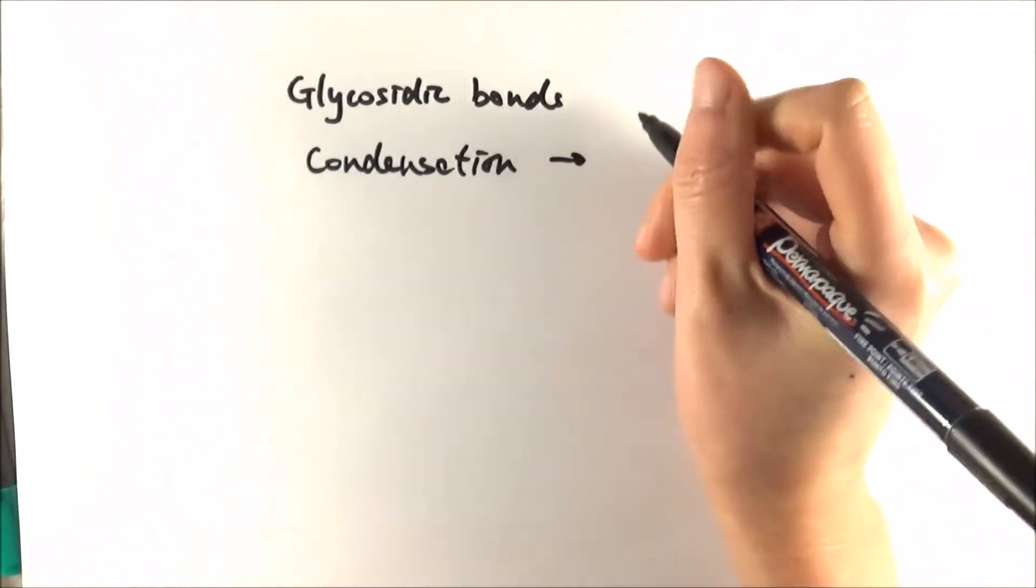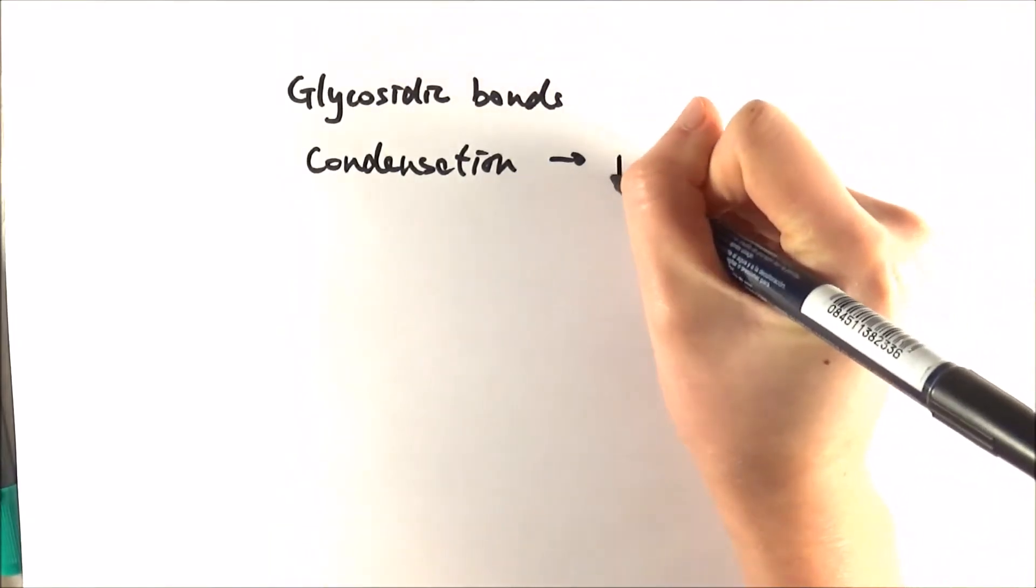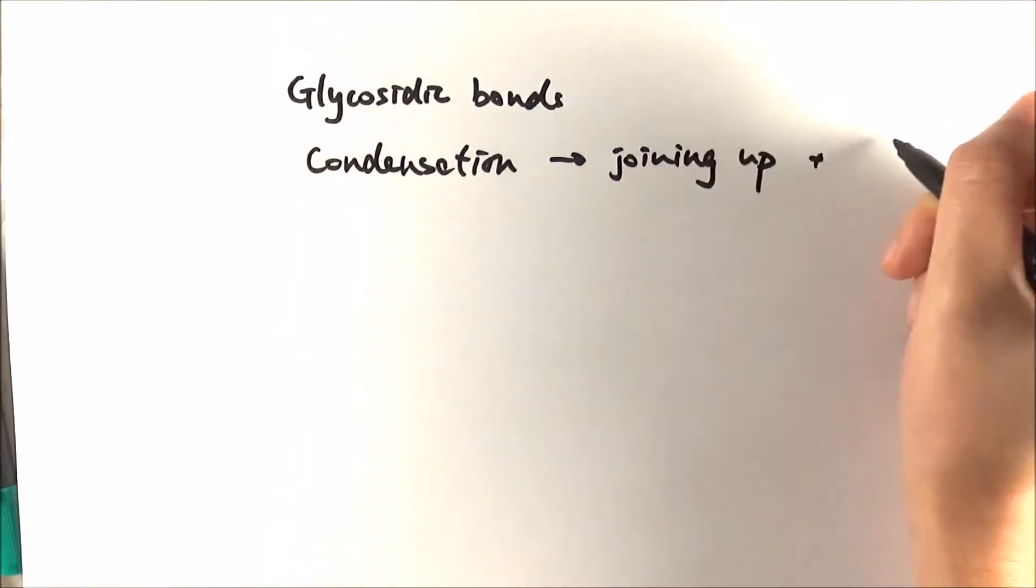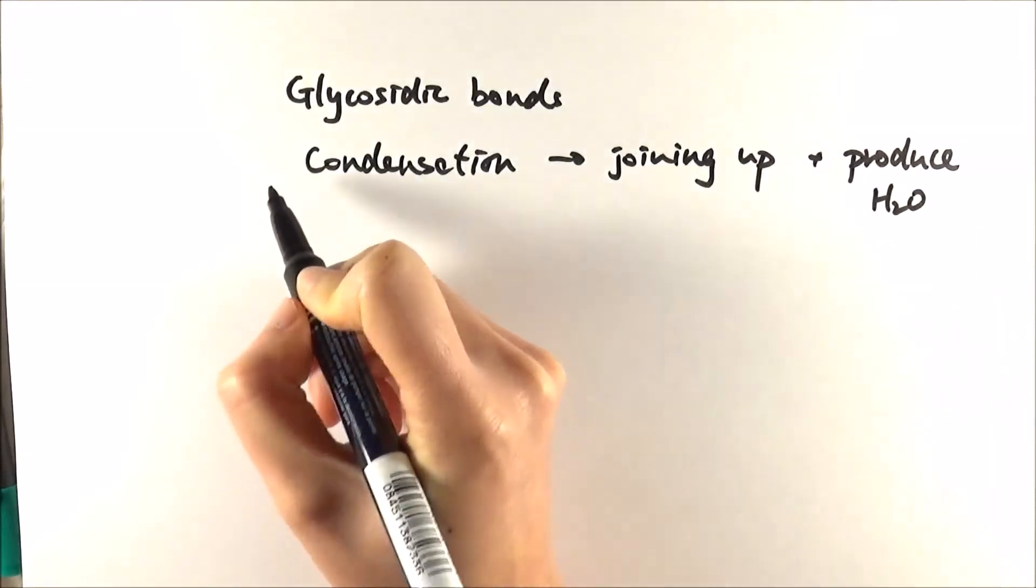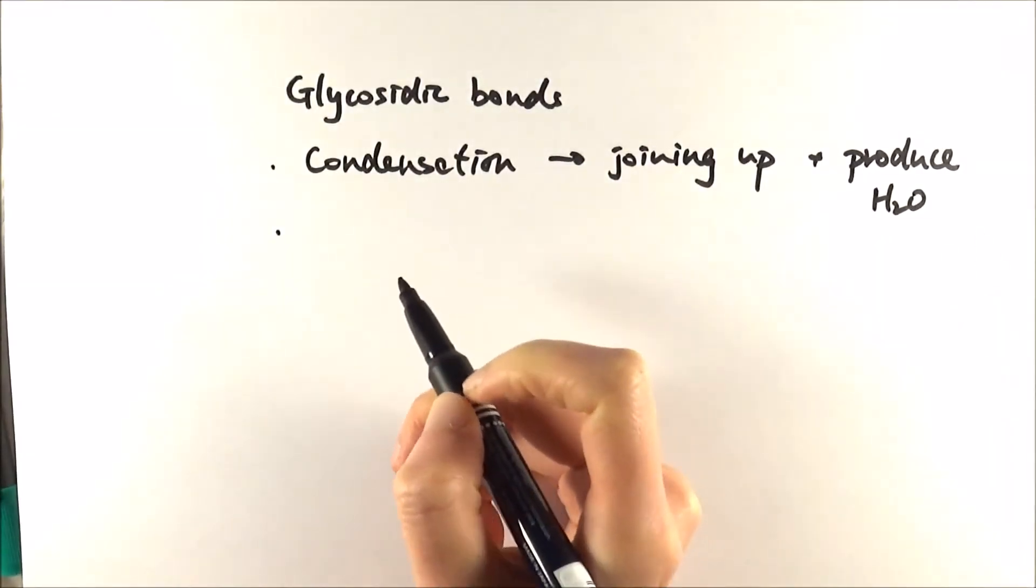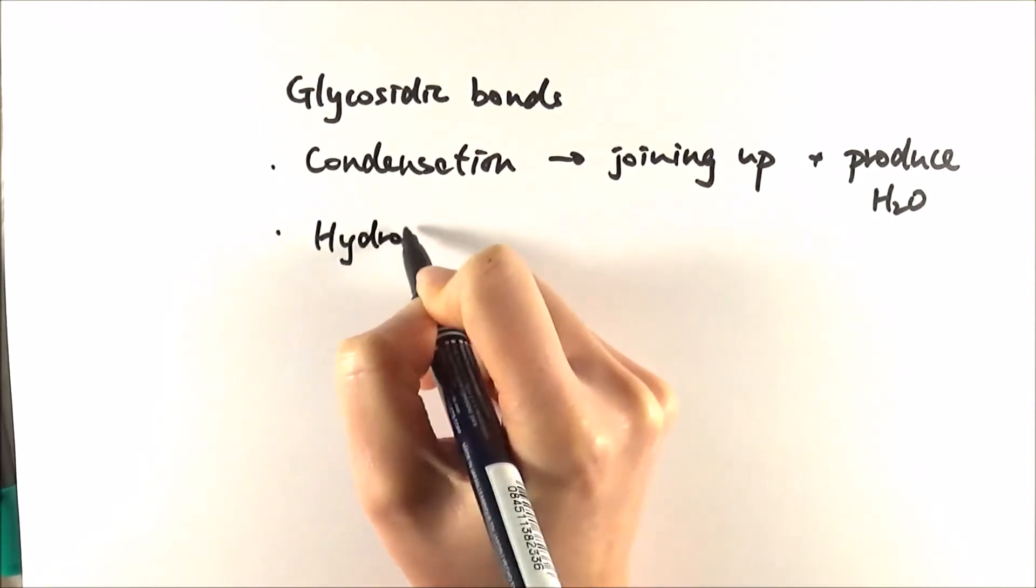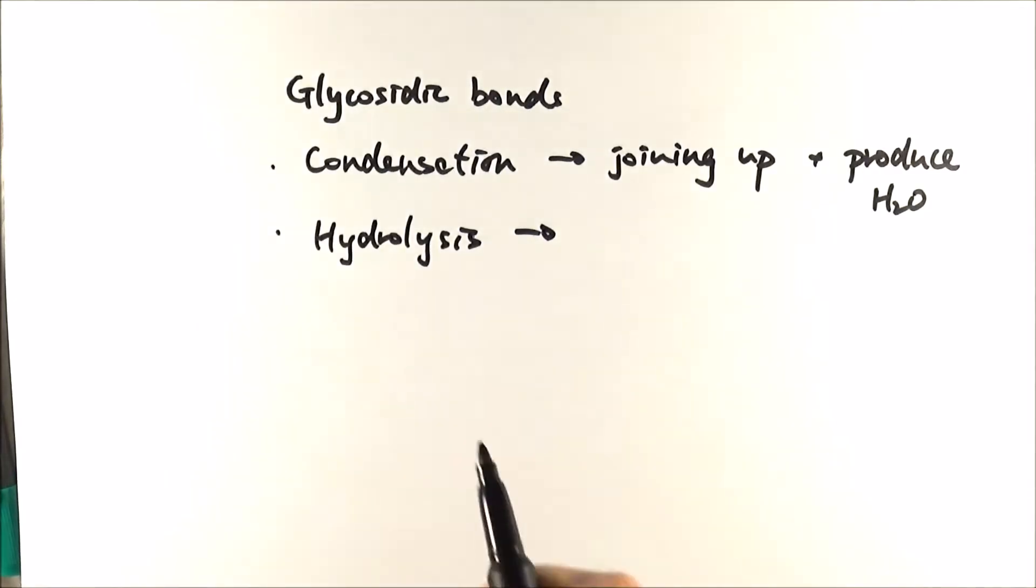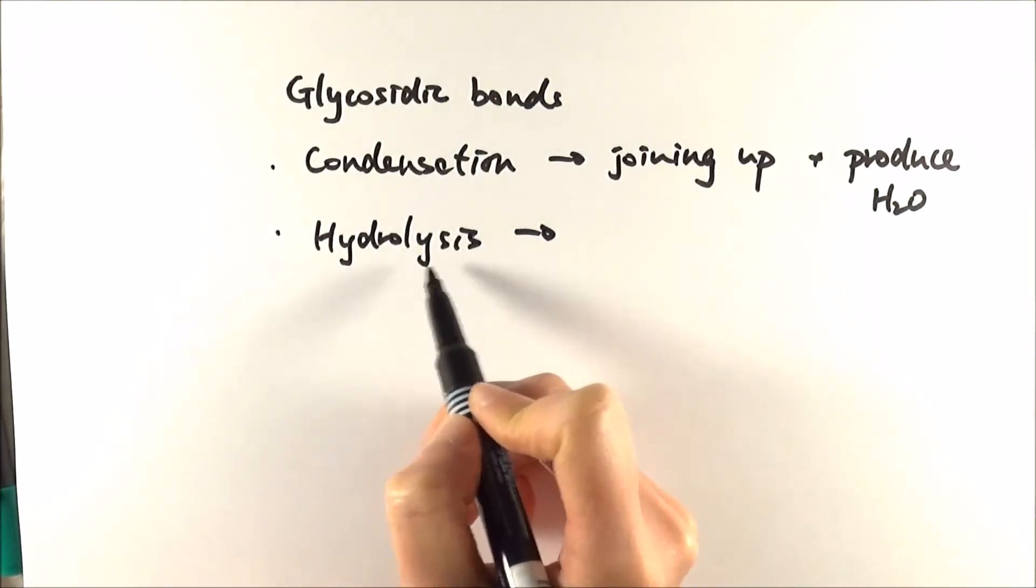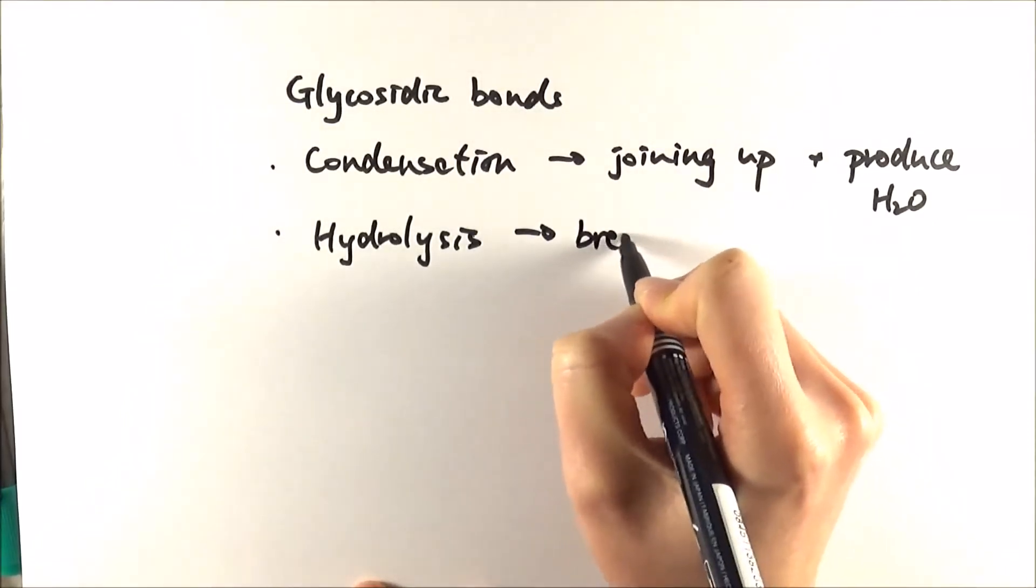So this is when two glucose molecules join up together. When they join up, they also produce a water molecule, and when they break down the glycosidic bond they do so by a reaction called hydrolysis. Again, in biology quite often you need to think about the name: hydro meaning water, lysis meaning breaking down. So basically breaking down using water.